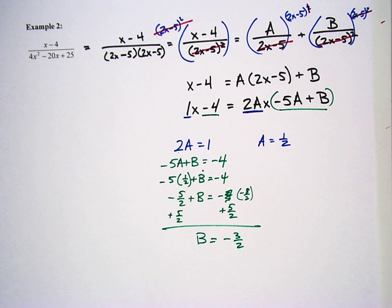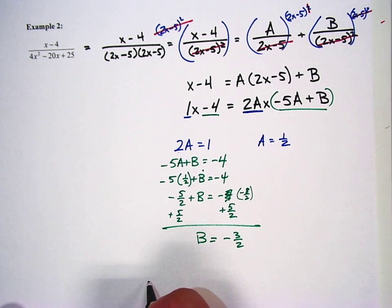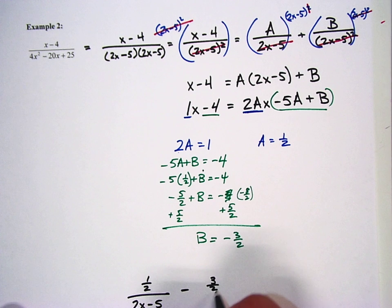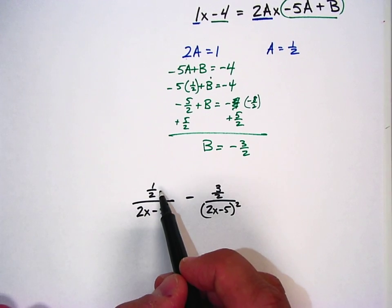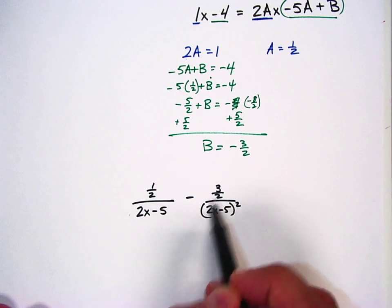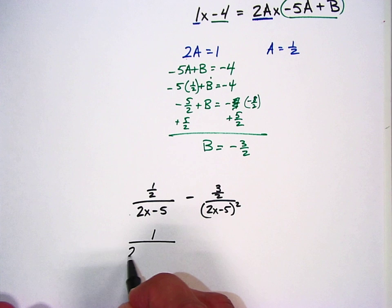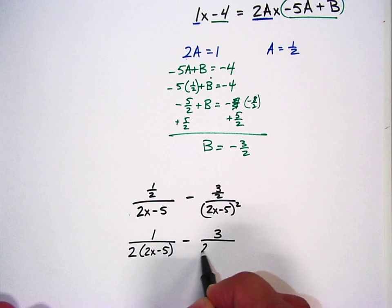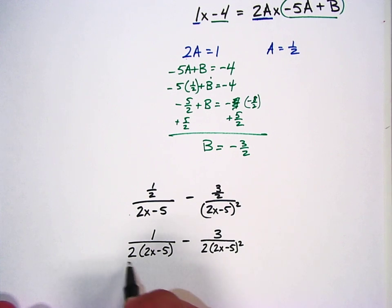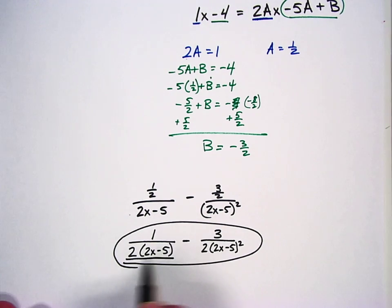Now, because A and B are fractions, we need to be careful about how we plug them back in. Writing 1 half over 2x minus 5 minus 3 halves over 2x minus 5 squared is not ideal — we don't like fractions within fractions. So instead, we move the denominators down: the final answer is 1 over 2 times (2x minus 5), minus 3 over 2 times (2x minus 5) squared. That's our final answer.